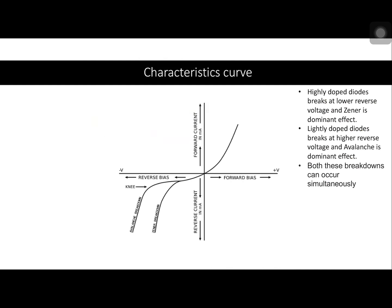If we combine them into a chart, Zener has broken at a lower voltage and avalanche at a higher voltage. Avalanche is a slower process occurring at higher reverse voltage. One important point is that both breakdowns can occur simultaneously — a junction breakdown could be due to the collective effects of both avalanche and Zener. To summarize: if a junction is highly doped, it breaks at lower reverse voltage and Zener is the dominant effect; if a junction is lightly doped, it breaks at higher reverse voltage and avalanche is dominant.